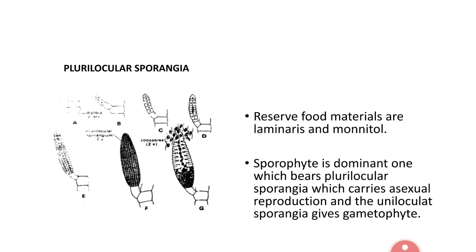Zoospores are diploid structures with two laterally inserted flagella. The flagellum towards the anterior side is long and smooth-surfaced, called the whiplash type. The other flagellum towards the posterior side is somewhat short and bears flimmer hairs, called the tinsel type. During favourable conditions, the cell walls of all locules dissolve and all zoospores emerge through the apical portion. After some time, these zoospores germinate and form the same mother sporophyte plants.